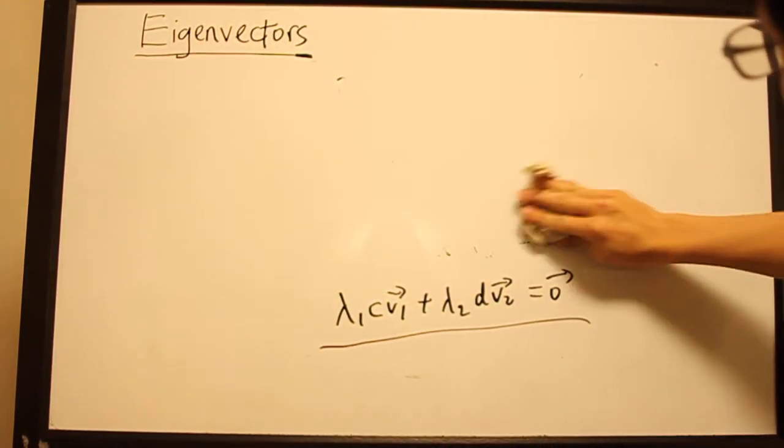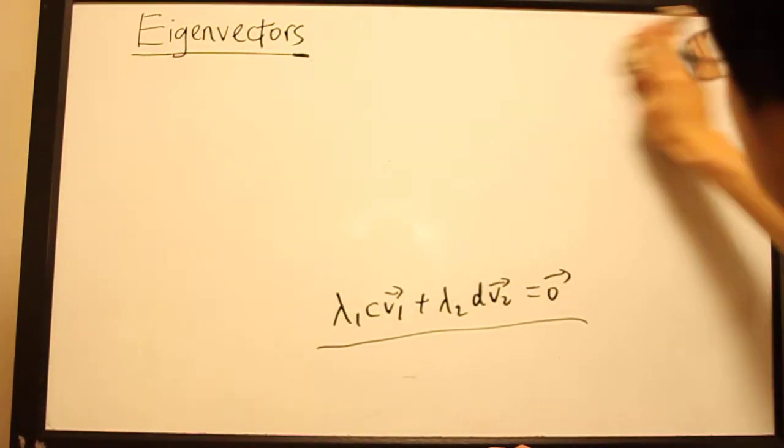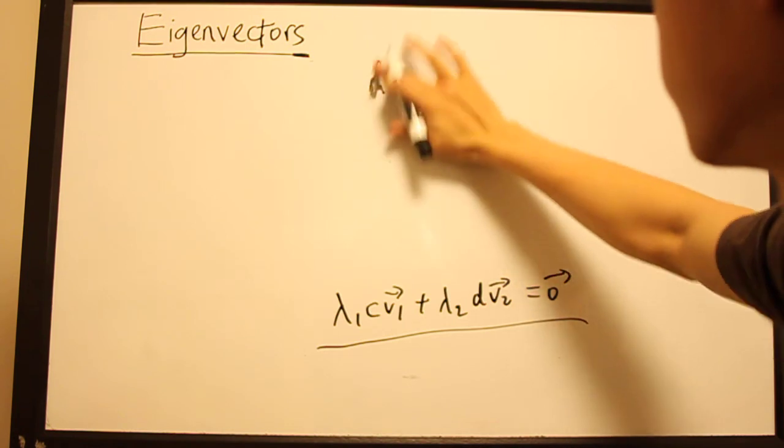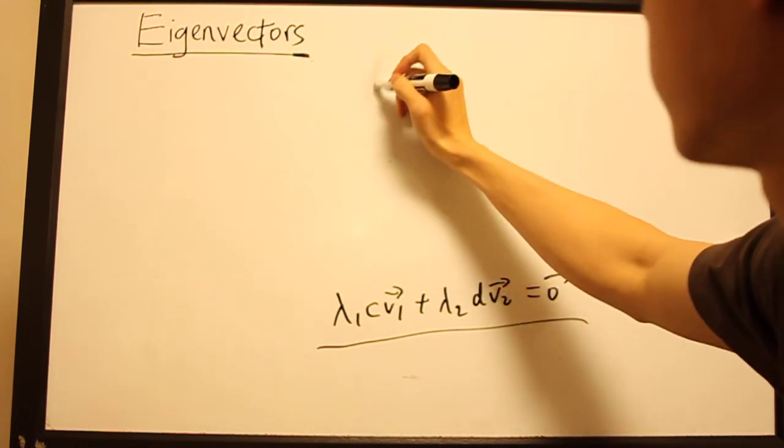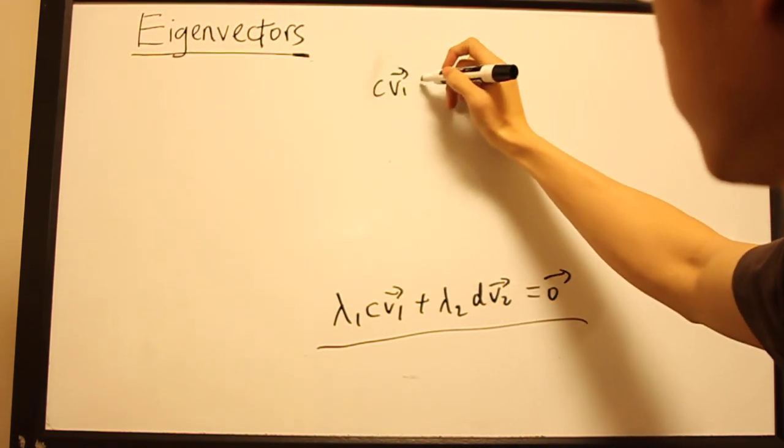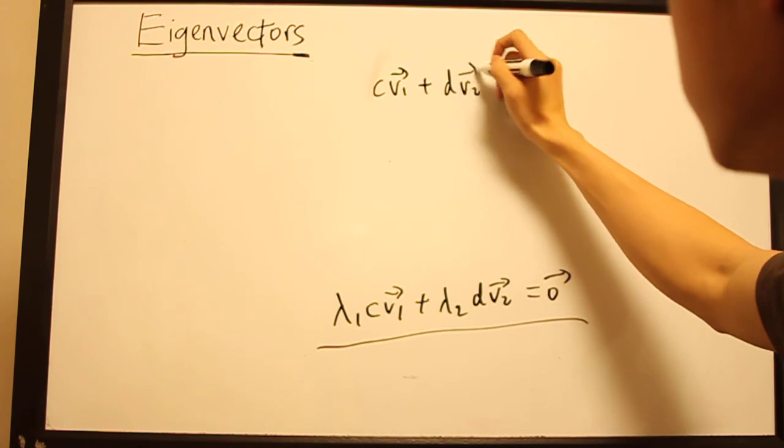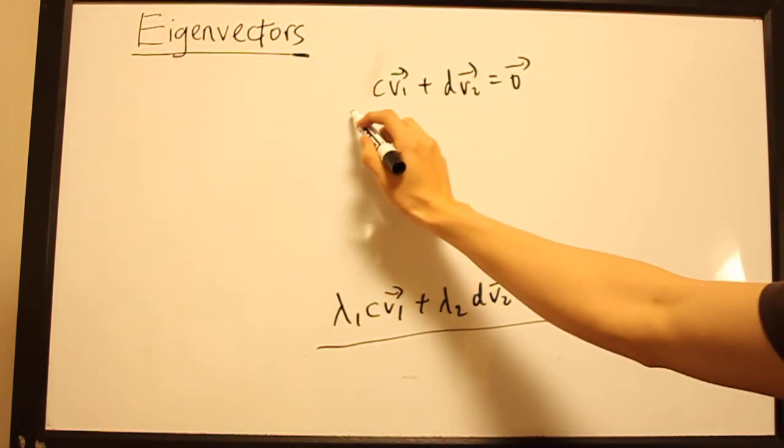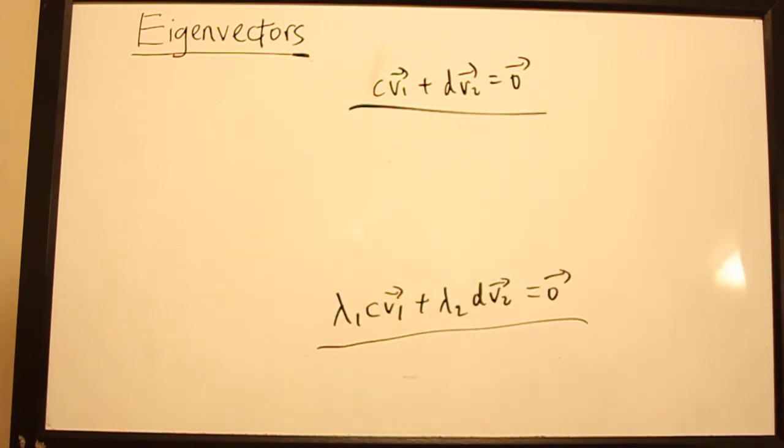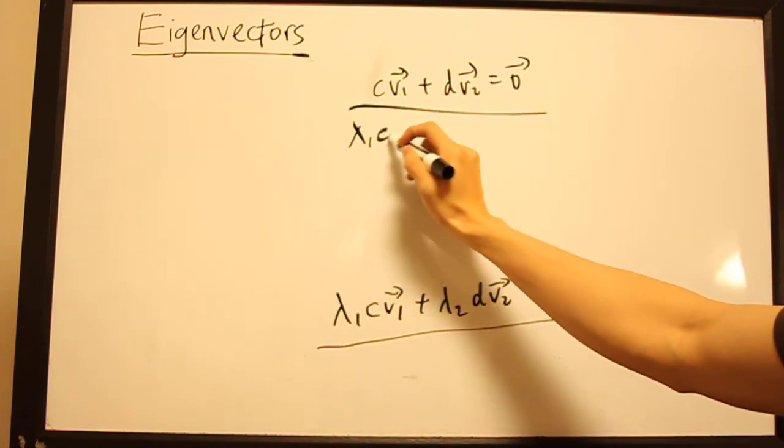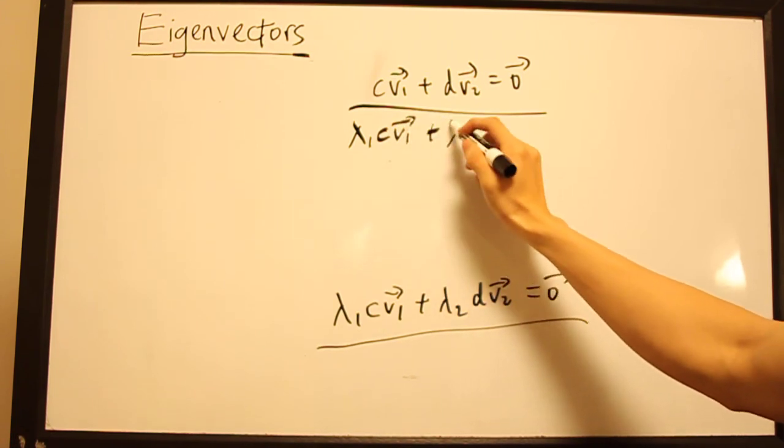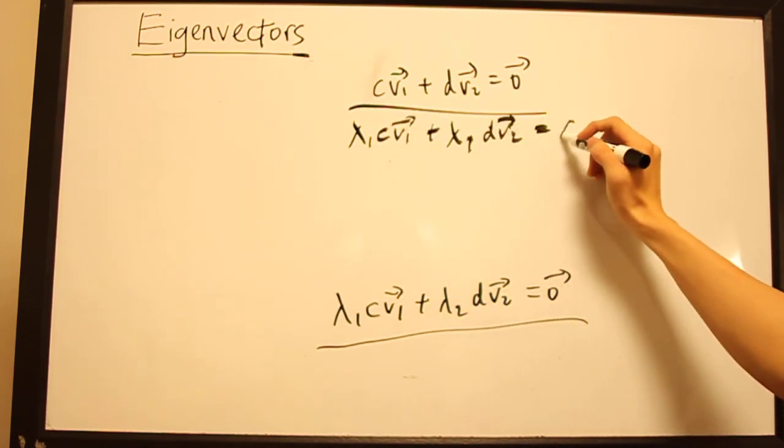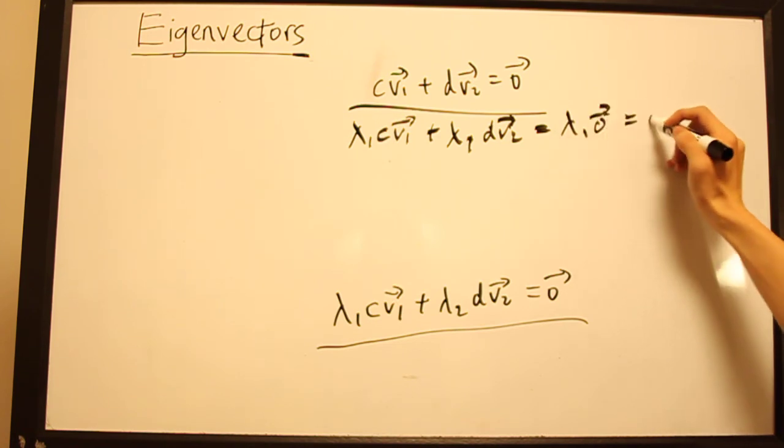Now recall our original equation C·V₁ plus D·V₂. Now, if we multiply this whole thing by scalar, say, λ₁, we get λ₁·C·V₁ plus λ₁·D·V₂ equals λ₁·0 equals 0.